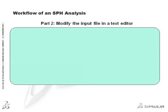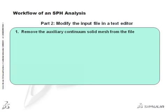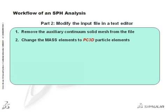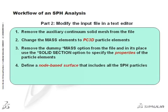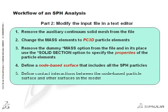In a text editor, start by removing the auxiliary continuum solid mesh from the file. Then, change the mass elements to PC3D particle elements. Remove the dummy mass keyword option from the file, and in its place, use the solid section option to associate the particle elements with the material defined previously in Abaqus CAE. Next, define a node-based surface that includes all the SPH particles. Note that particle elements do not have faces or edges; therefore, an element-based surface cannot be defined on these elements. Finally, define contact interactions between the node-based particle surface and any other node or element-based surfaces in the model.